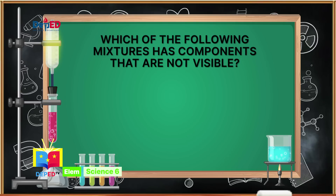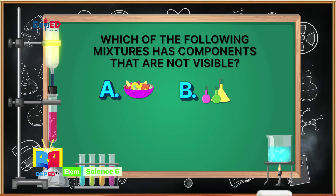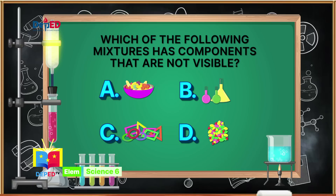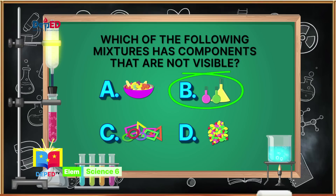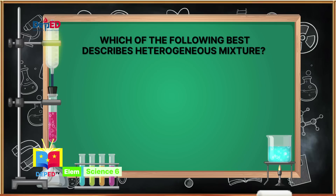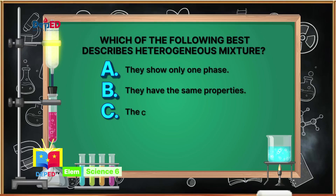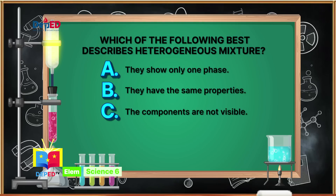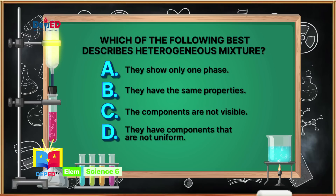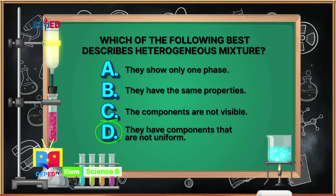Number 2: Which of the following mixtures has components that are not visible? Number 3: Which of the following best describes a heterogeneous mixture? A. They show only one face. B. They have the same properties. C. The components are not visible. D. They have components that are not uniform. The correct answer is letter D — they have components that are not uniform.